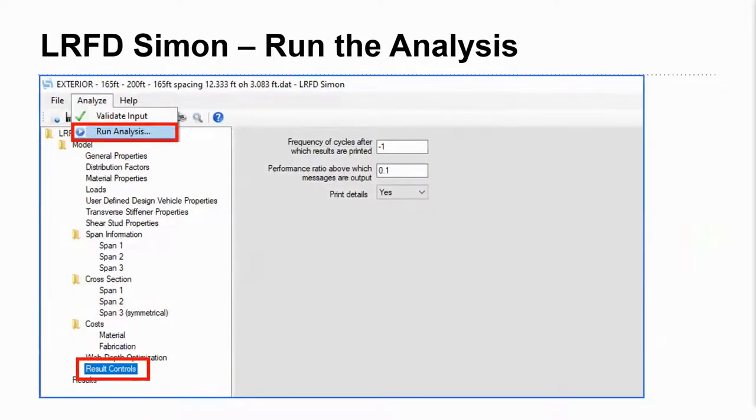Right before we're ready to run this, I would encourage you to read the user manual on the results control. These parameters have a significance and this is what I like to have. I like to look at the final design cycle and I like to look at pretty much all the performance ratios. So anything above 0.1 I'd like to see, and I prefer the details report. I like to look at the numbers and validate things. So this is what works for me, but perhaps something different is preferred by you.